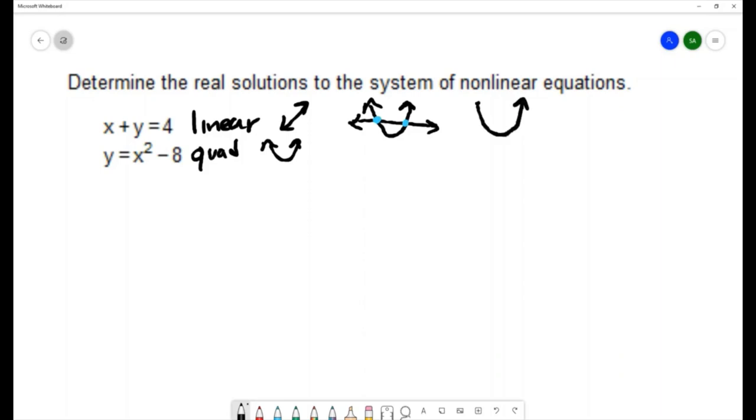We could also draw the line so that it just touches in a single point. We call that tangent to the curve in that case there's only one intersection point and one solution to that system.